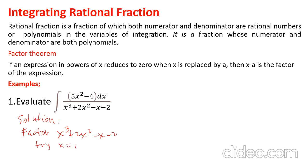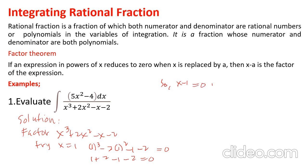Check: 1³ + 2(1)² - 1 - 2 equals 0. Since this equals 0, x minus 1 is a factor.